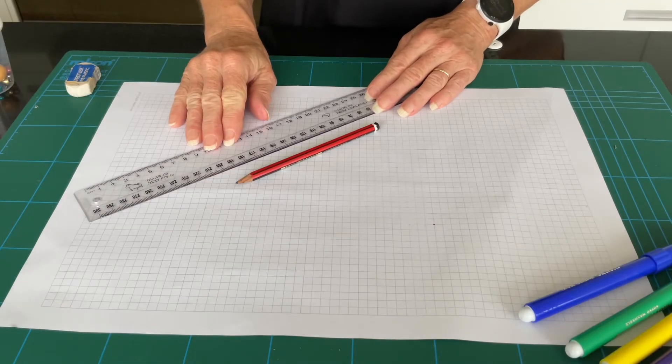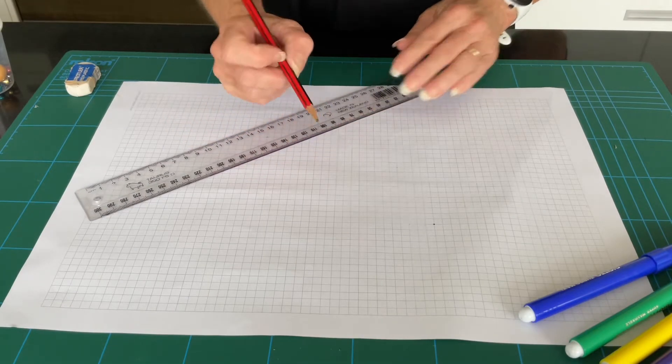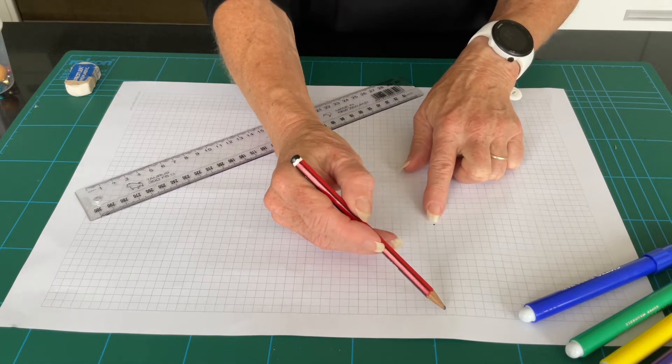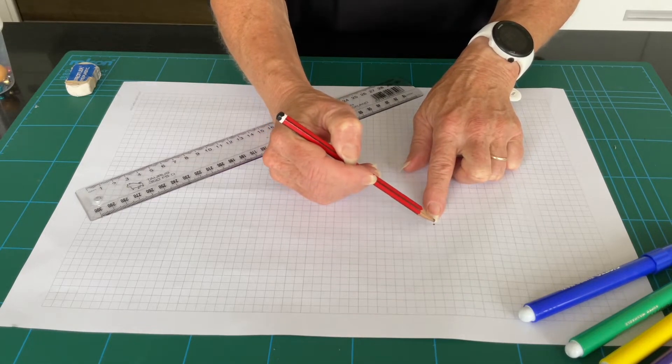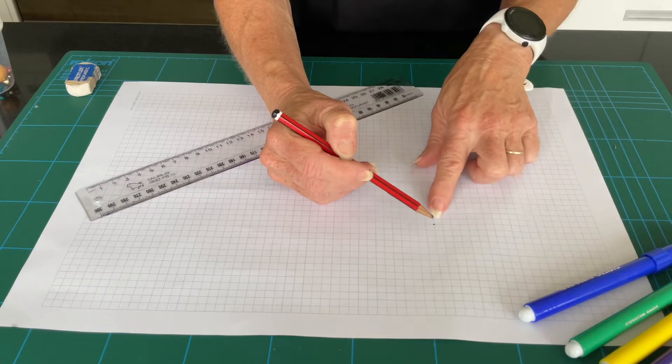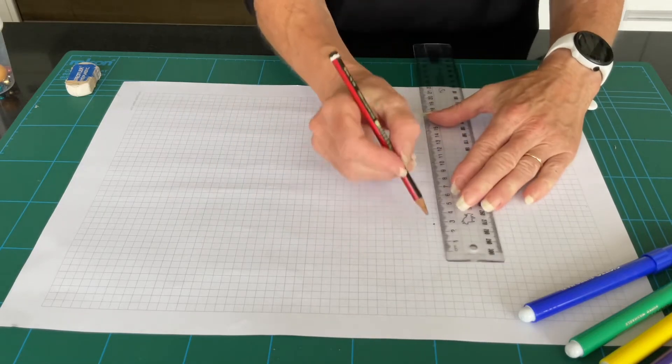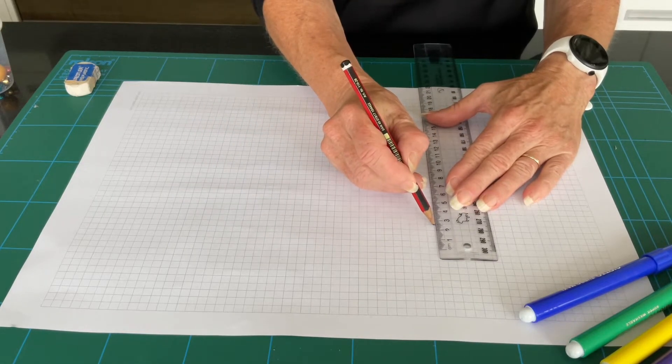Have your pencil and ruler ready. Make a mark that is 14 squares from the bottom of the page and 19 squares from the right-hand side. Now draw your first square which is a 1 by 1.